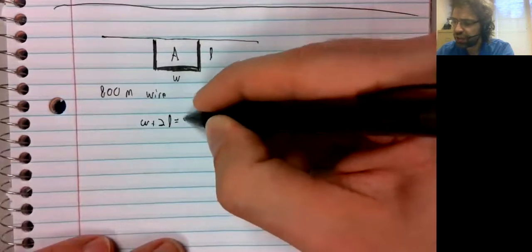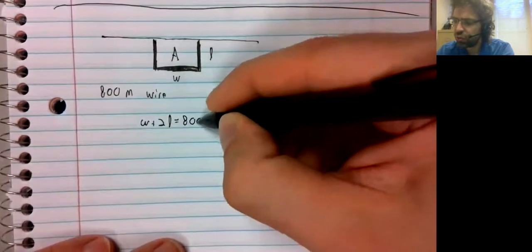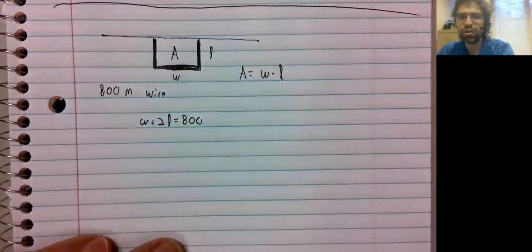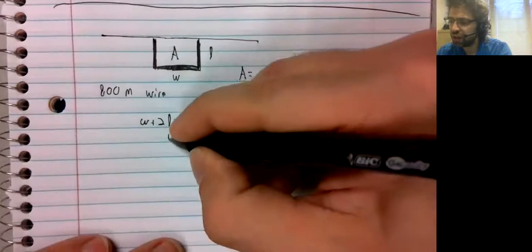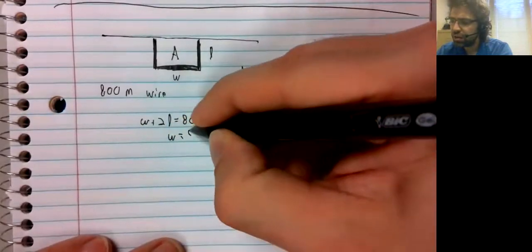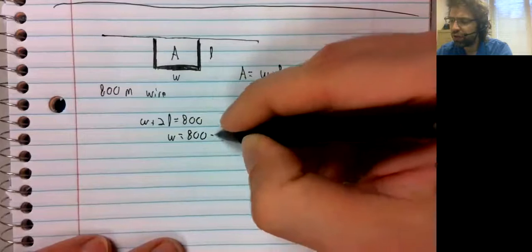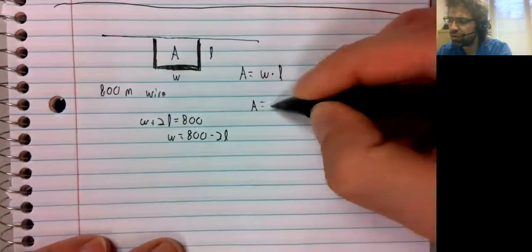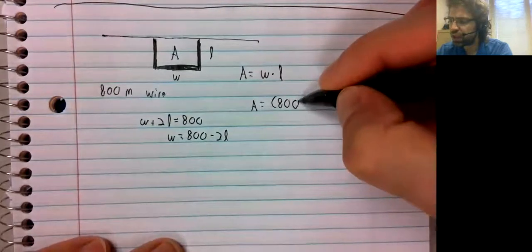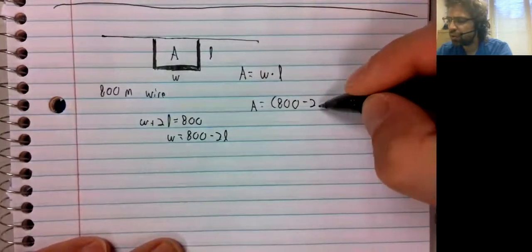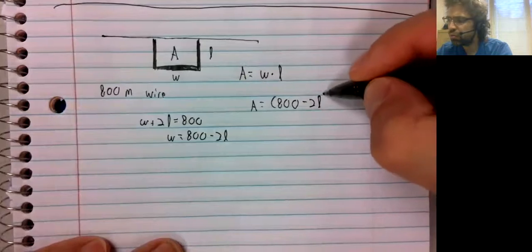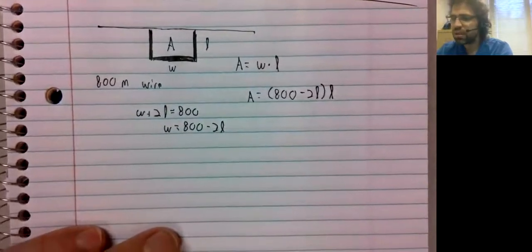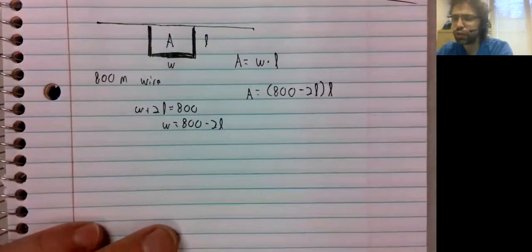Use the fact that we know how much wire these three sides give us to solve for one of the variables. It doesn't matter which. Maybe solving for W is slightly cleaner because we don't have any fractions.